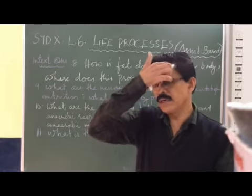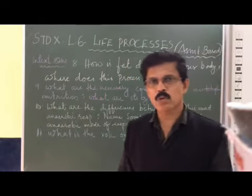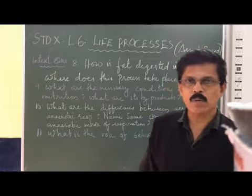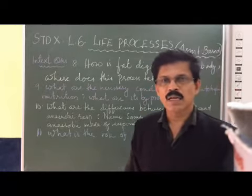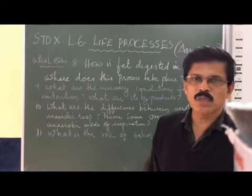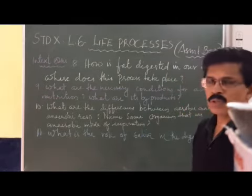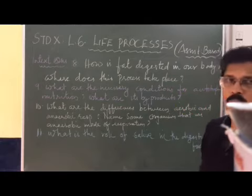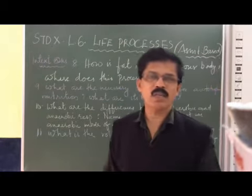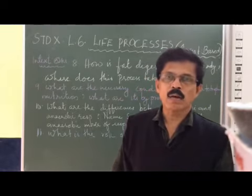This light energy is converted into ATP and NADPH. In the dark reaction, which takes place in the stroma, carbon dioxide is reduced using the ATP and NADPH. Photosynthesis is a very important process, and its byproduct is oxygen, which is formed by the splitting of water in the presence of sunlight.